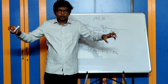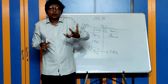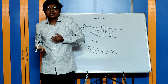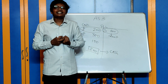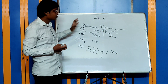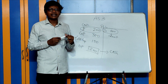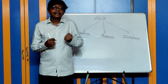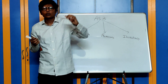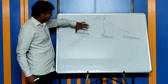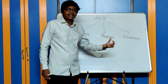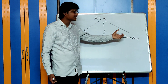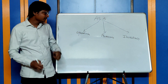AS3 drills down into three areas. It wants to identify cash generated from operating activities, cash generated from financing activities, and cash generated from investing activities. AS3 classifies activities into three separate buckets to identify how much cash is generated from operating activities, how much is generated or spent in financing activities, and how much is generated or spent in investing activities.